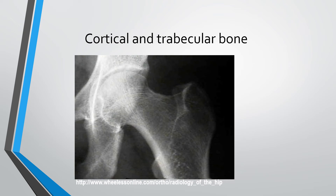Also within bone are trabeculum — threads of bone that, though individually very thin, are collectively quite strong and very responsive to the forces imparted to the bone. Looking at a radiograph of the distal femur, you can identify the supporting bundle and the arcuate bundle of trabeculum within the head of the femur, where the bone appears denser due to the trabeculum.